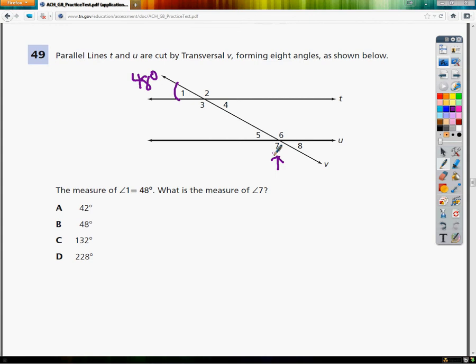Now I need to mark the angle with the same butt as one, which is to say the vertical angle for one. So I'm going to mark this angle right here, which is number four. See how they have the same butt? It's like they face away from each other. So those are the ones with the same butt.